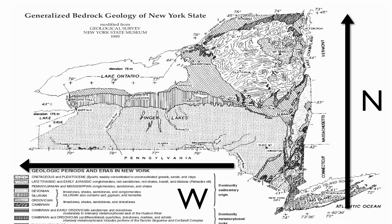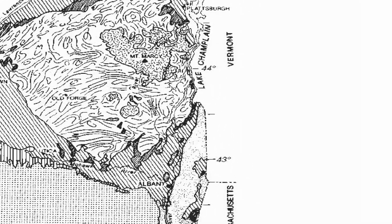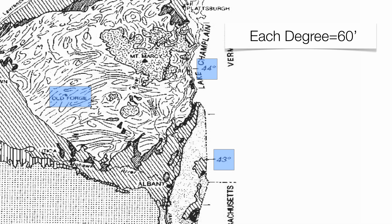Let's first start off focusing on some numbers in the 40s — those are going to be your latitude values. You'll notice here that I have 43 degrees, increasing up to 44 degrees. The city of Old Forge doesn't fall on either one of them. So what we do is take each degree value and break it up into increments called minutes. If you can imagine that 43 degrees is equivalent to 0 minutes and 44 degrees is equivalent to 60 minutes, you can figure out more accurately what Old Forge's latitude is going to be.